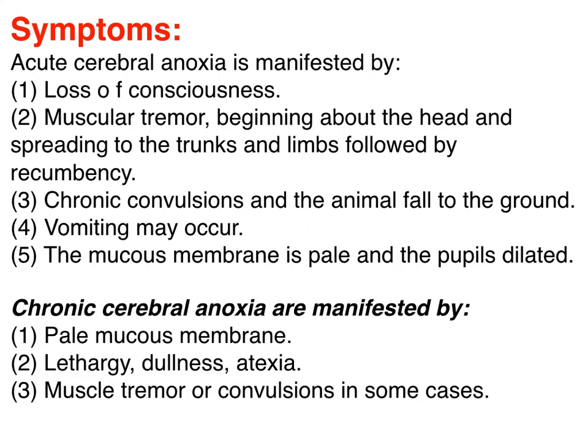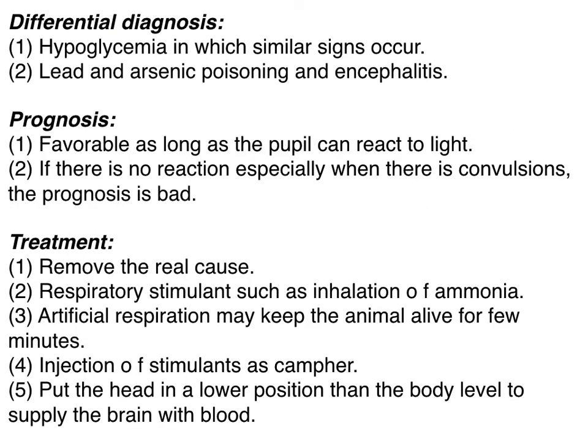Symptoms: acute cerebral anoxia is manifested by loss of consciousness, muscular tremors, tonic convulsions, vomiting may occur, mucous membranes are pale or cyanotic, and pupils are dilated. Chronic cerebral anoxia is manifested by pale mucous membranes, lethargy, dullness, ataxia, and muscle tremors or convulsions in some cases. Differential diagnosis includes hypoglycemia, lead and arsenic poisoning, and encephalitis. Prognosis is favorable as long as the pupils can react to light.